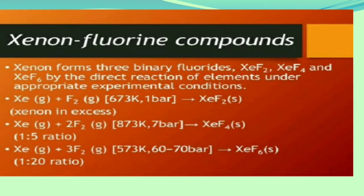Xenon forms three binary fluorides: XeF2, XeF4, and XeF6, by direct reaction of the elements under appropriate experimental conditions. For example, when xenon is reacted with fluorine F2, it gives the solid XeF2, where xenon is in excess amount.